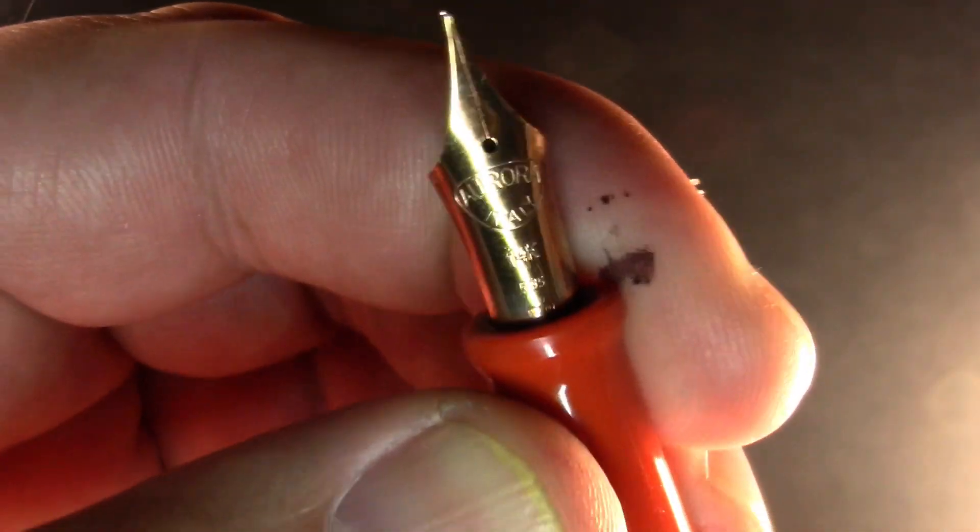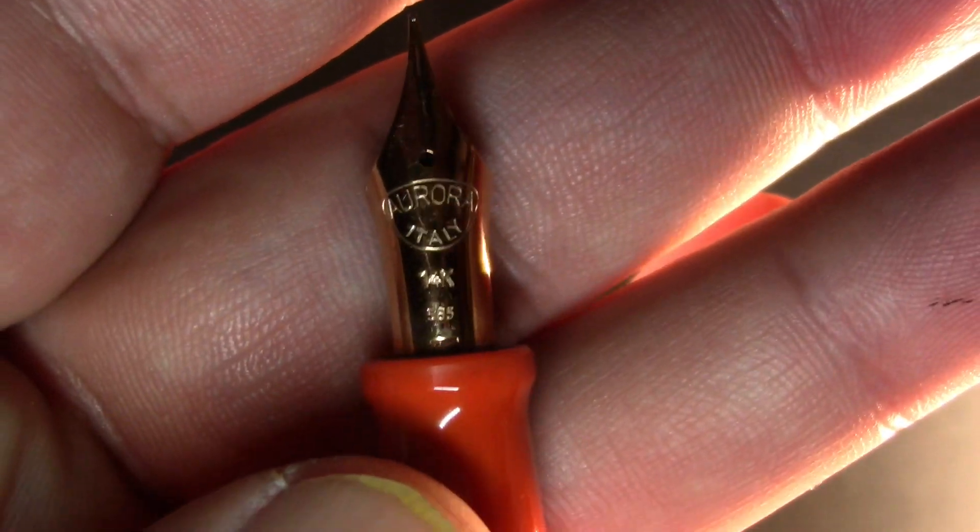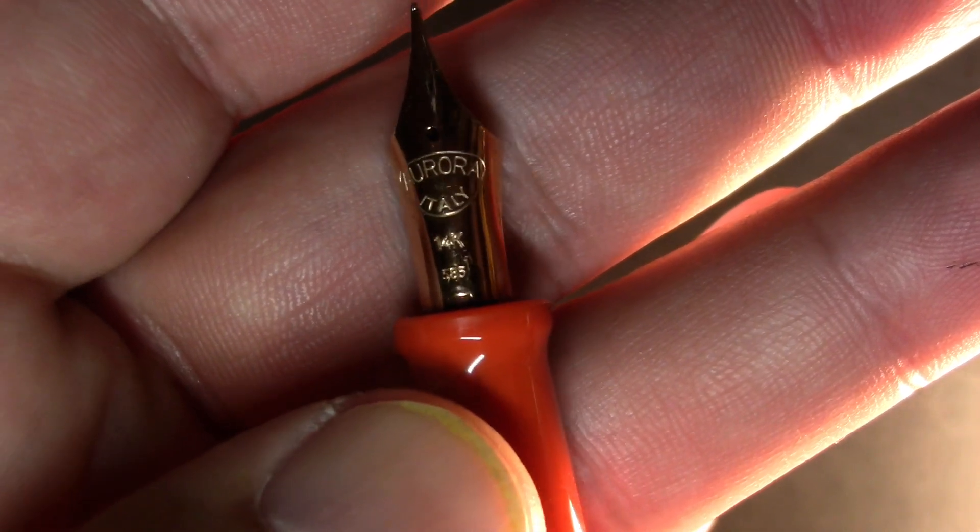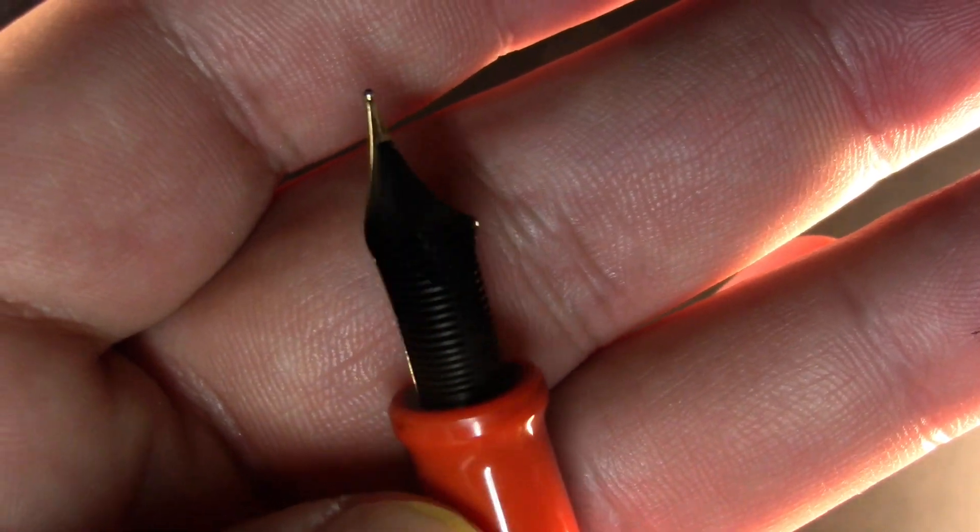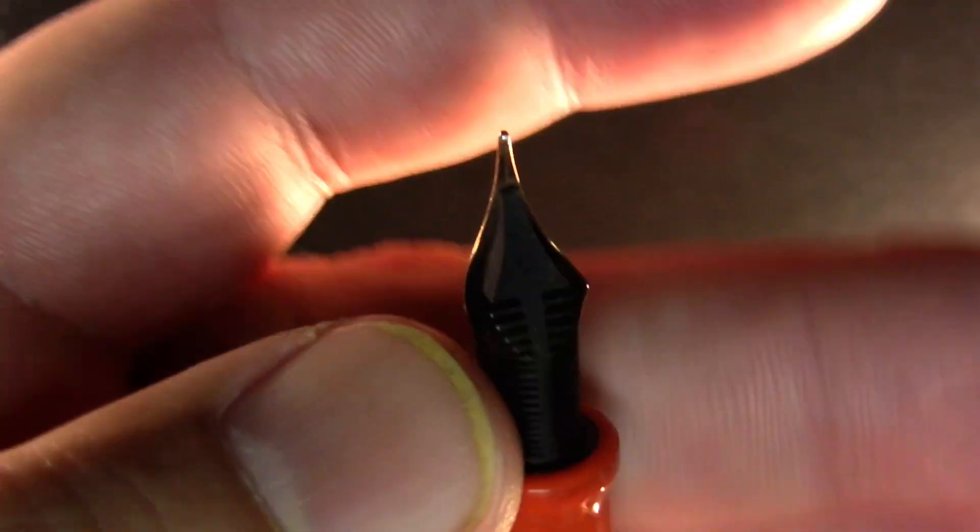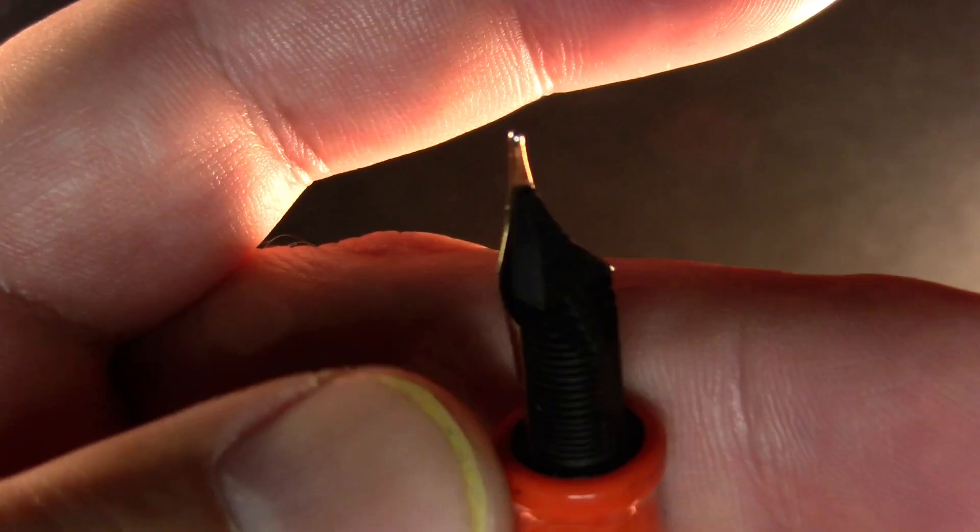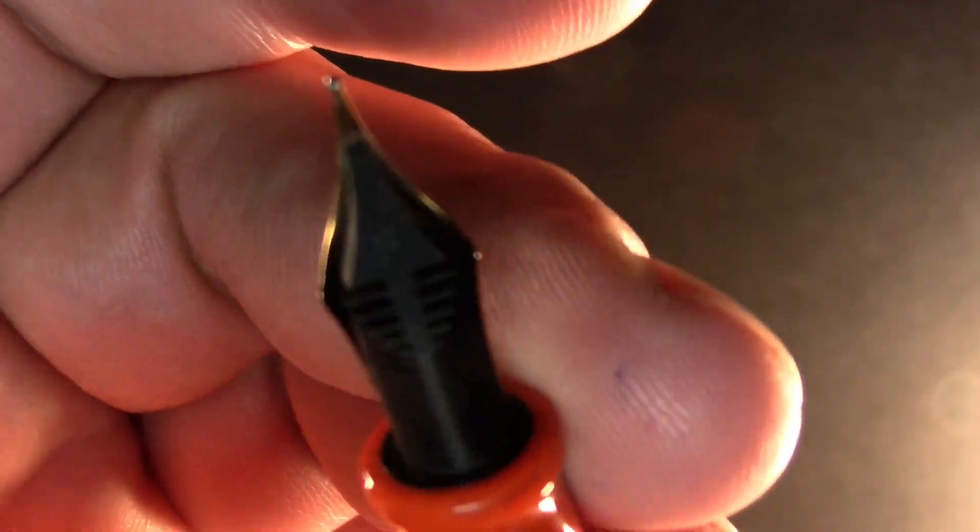As far as the nib, this is a flex, but it's a flex fine. Aurora and Pilot both make their own nibs. I'm not 100% sure if the feed is ebonite or plastic, don't really care, but there you go.